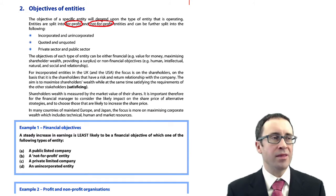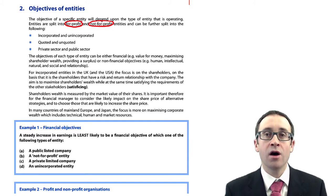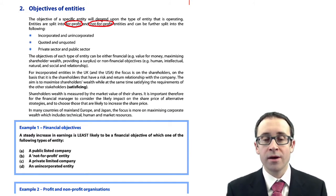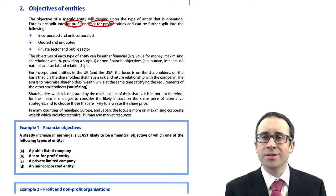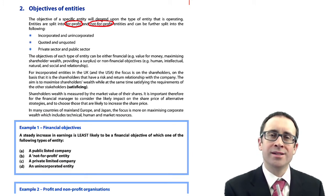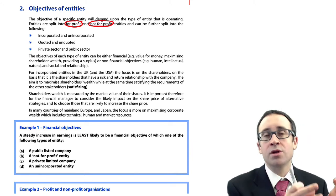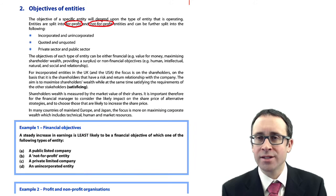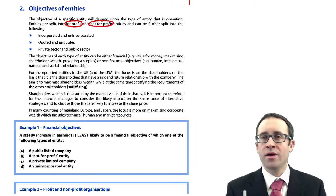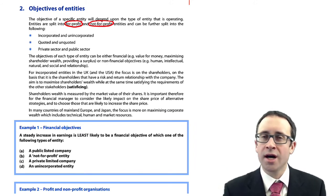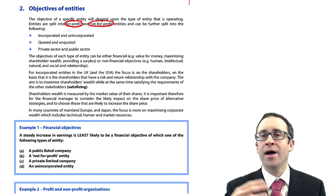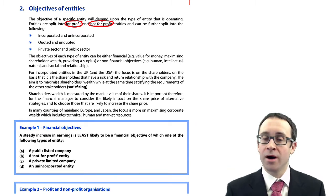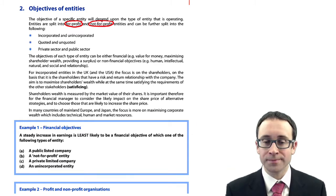Prime examples would be the likes of UNICEF and Oxfam — they are all not-for-profit entities. Their main focus is not necessarily to generate a surplus; it'd be good if they did, but their main focus is more non-financial — to ensure that they're reducing child poverty and helping out people in less developed parts of the world.